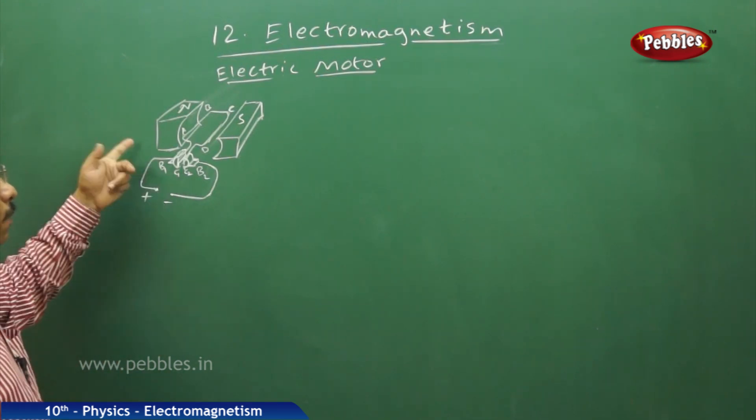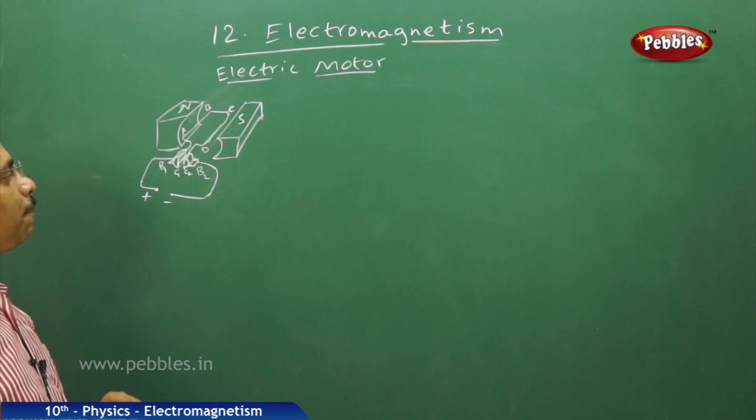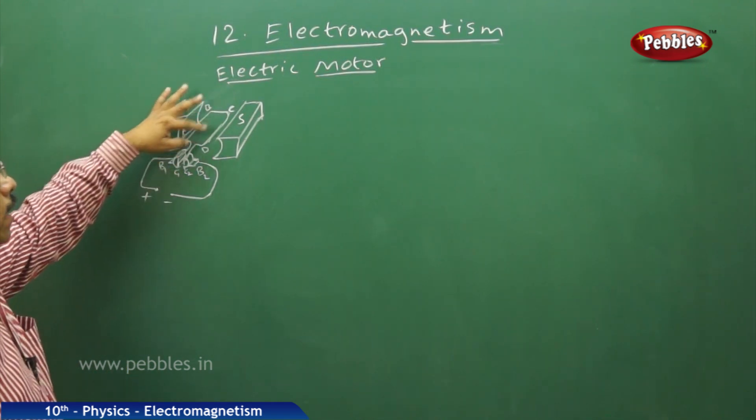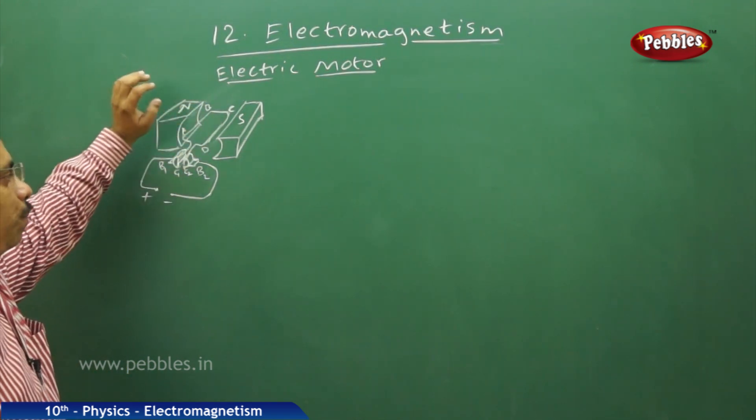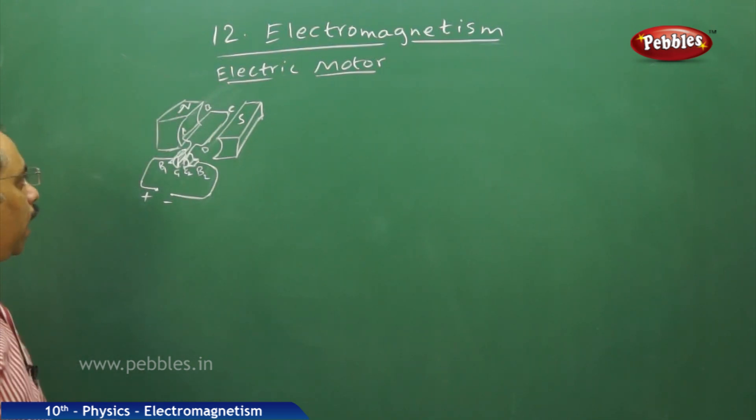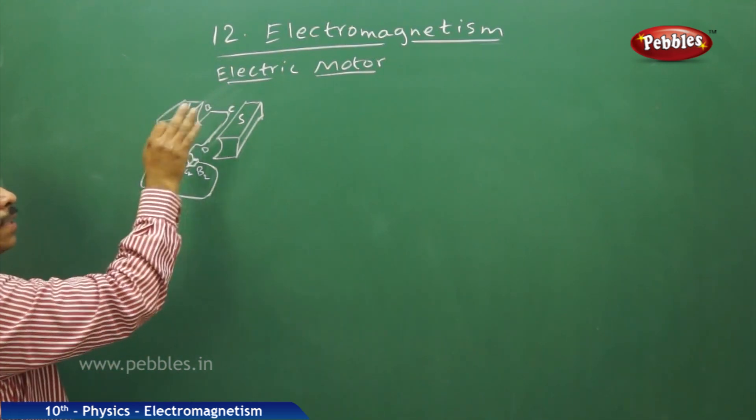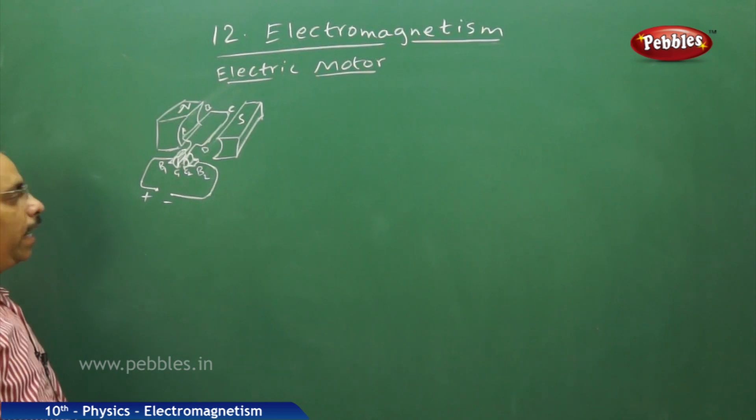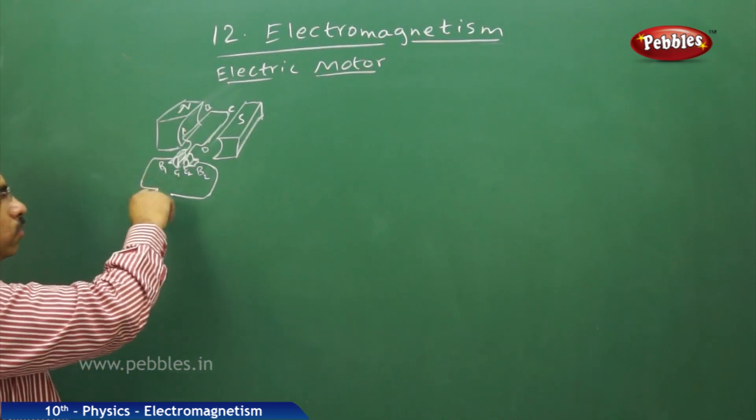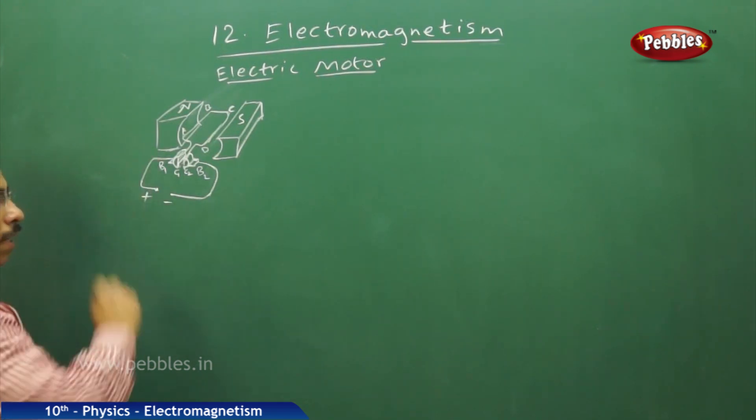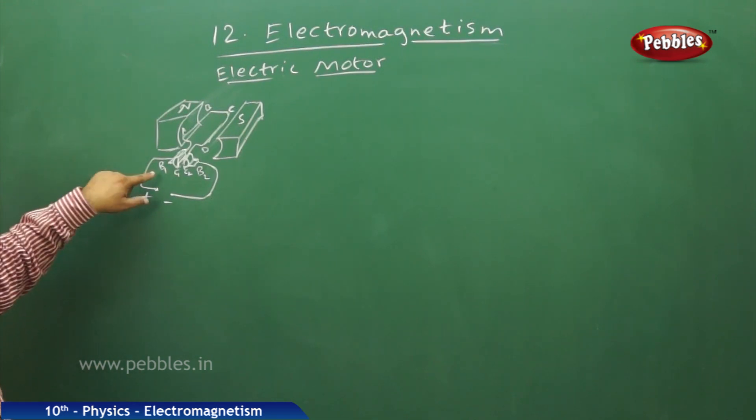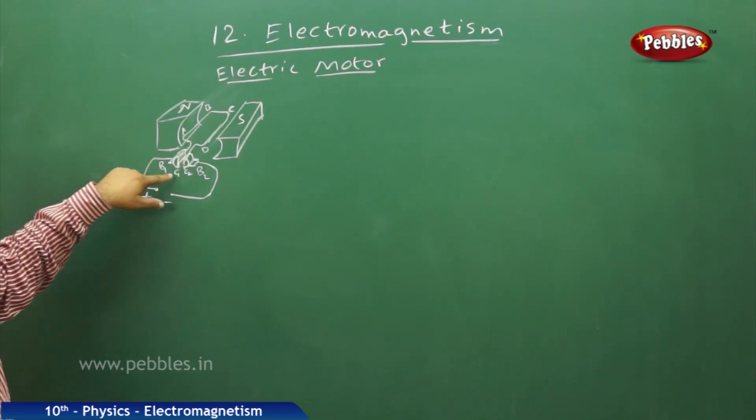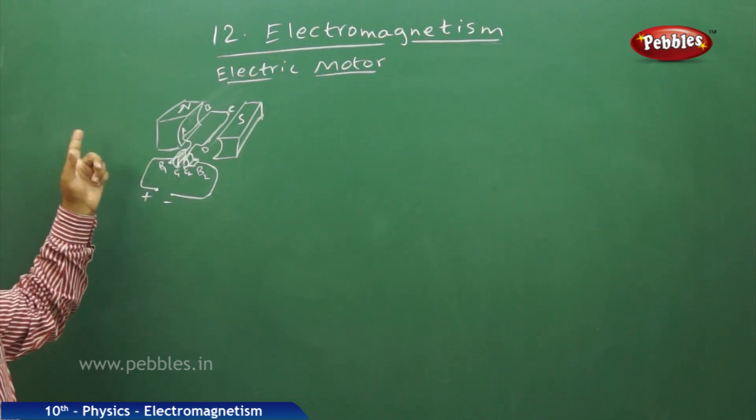When C2 is coming into contact with B1, C2 and DC part of the loop or the coil are on the left side and now this AB part of the coil is on the right side. Again, the current is going through B1. Earlier, the current was going from B1 to C1. Now, the current goes from B1 to C2.